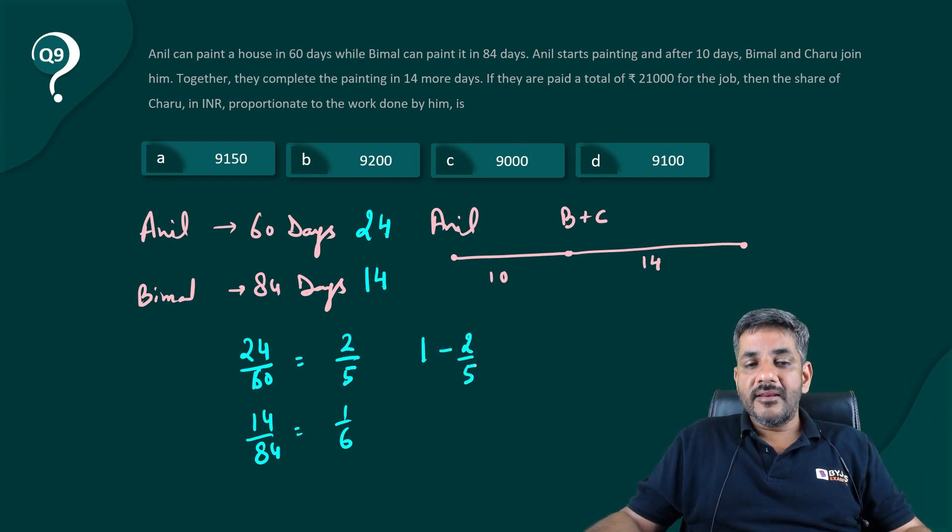So out of a total one work, 2 by 5 is done by Anil, 1 by 6 is done by Bimal. So what is the work done by Charu? Just take an LCM of 30. It gives me 30 minus 12 minus 5, that is 13 by 30.